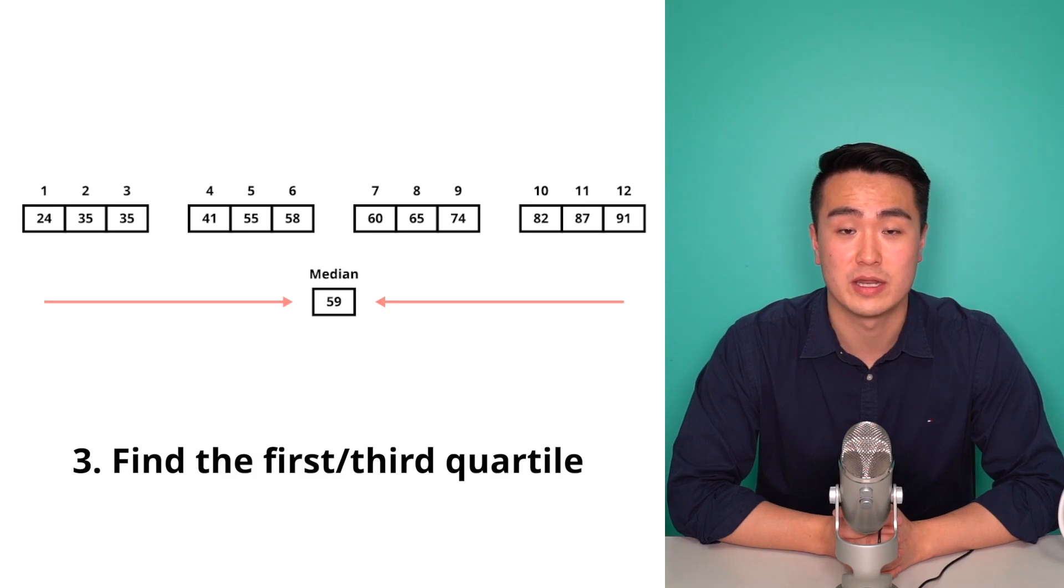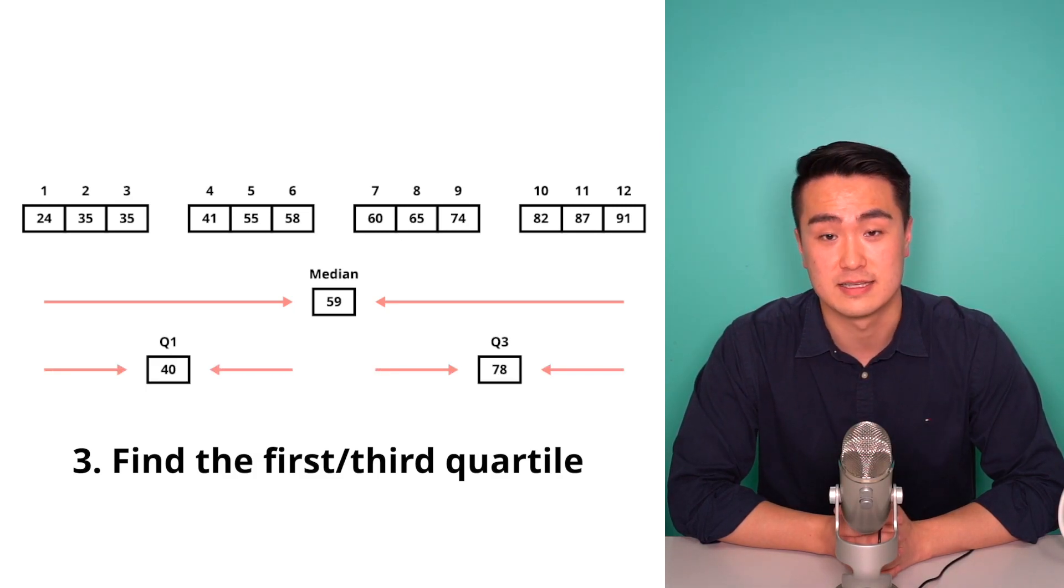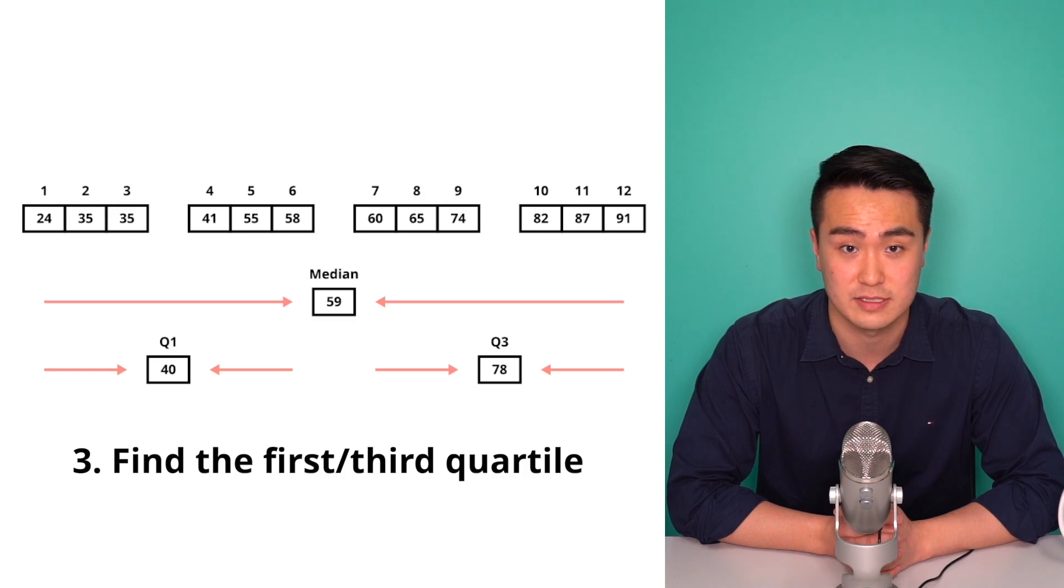3. Find the data point in the middle position of the first half and the second half. This is known as your first and third quartiles. Note, when you're looking for the quartiles, exclude the median in your calculation.